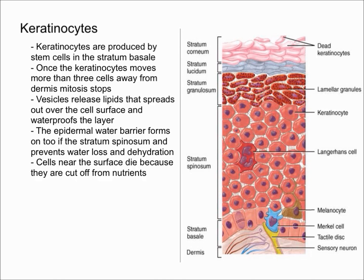Another thing to remember are desmosomes. Although desmosomes don't directly contribute to the barrier, they play an important role — they indirectly contribute by helping hold the cells together. Keratinocytes are so important because they are the predominant cell type in the epidermis, making up most of the epidermis — in fact, about 90% of the cells.